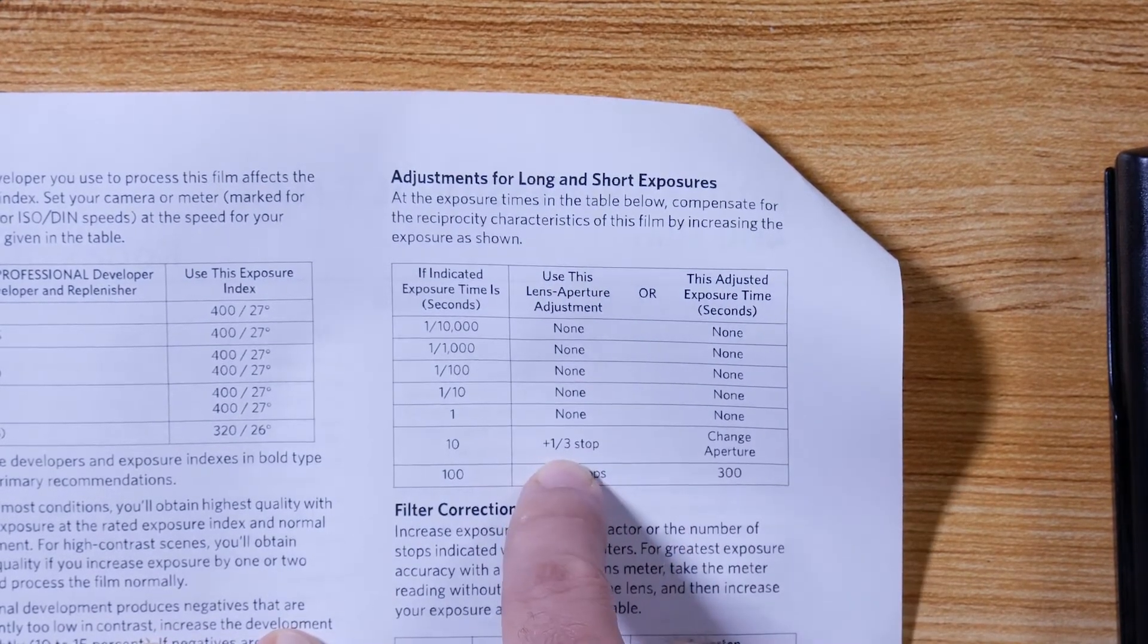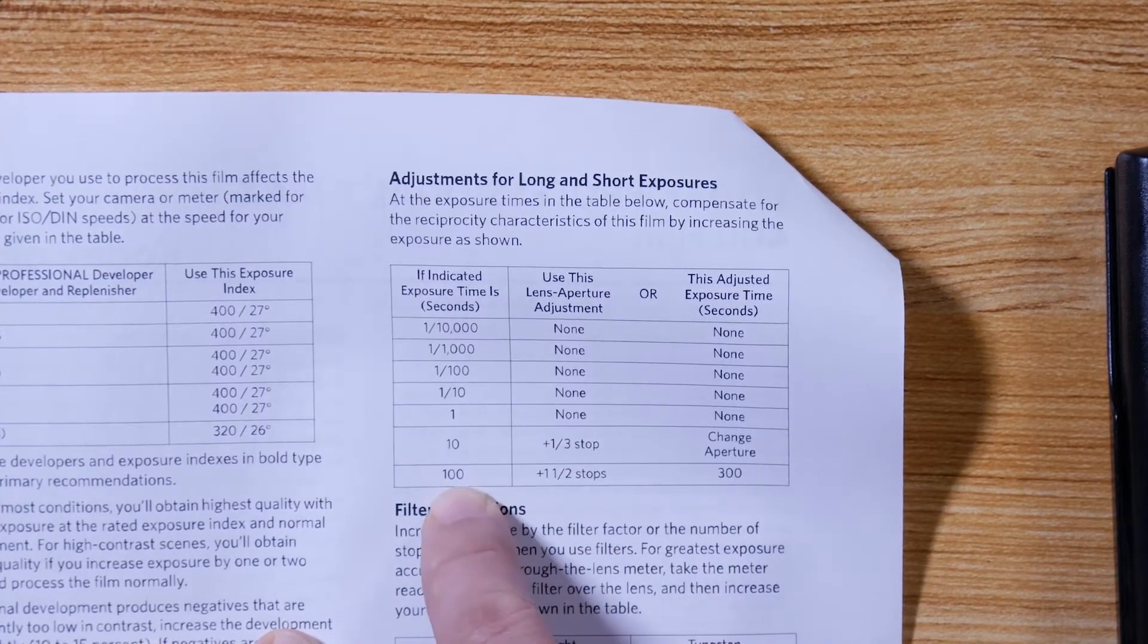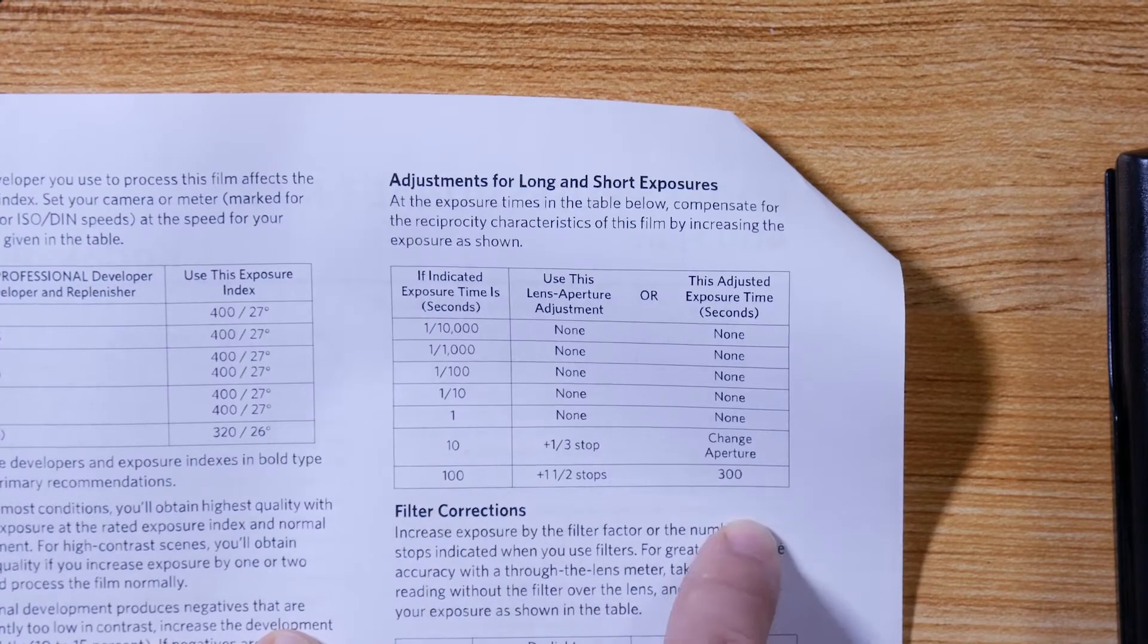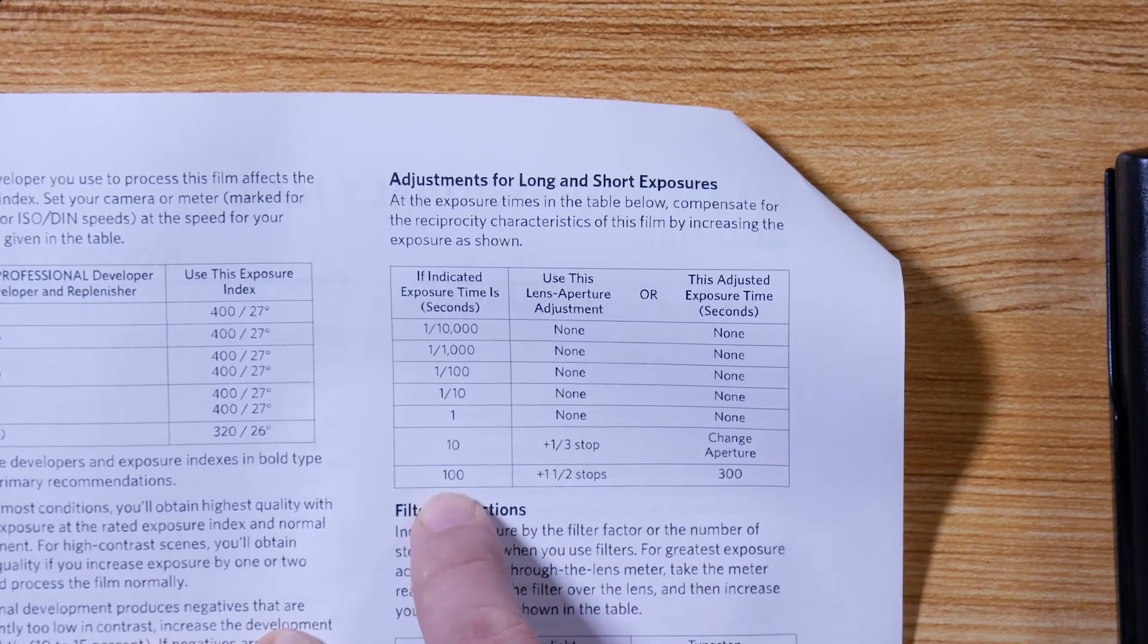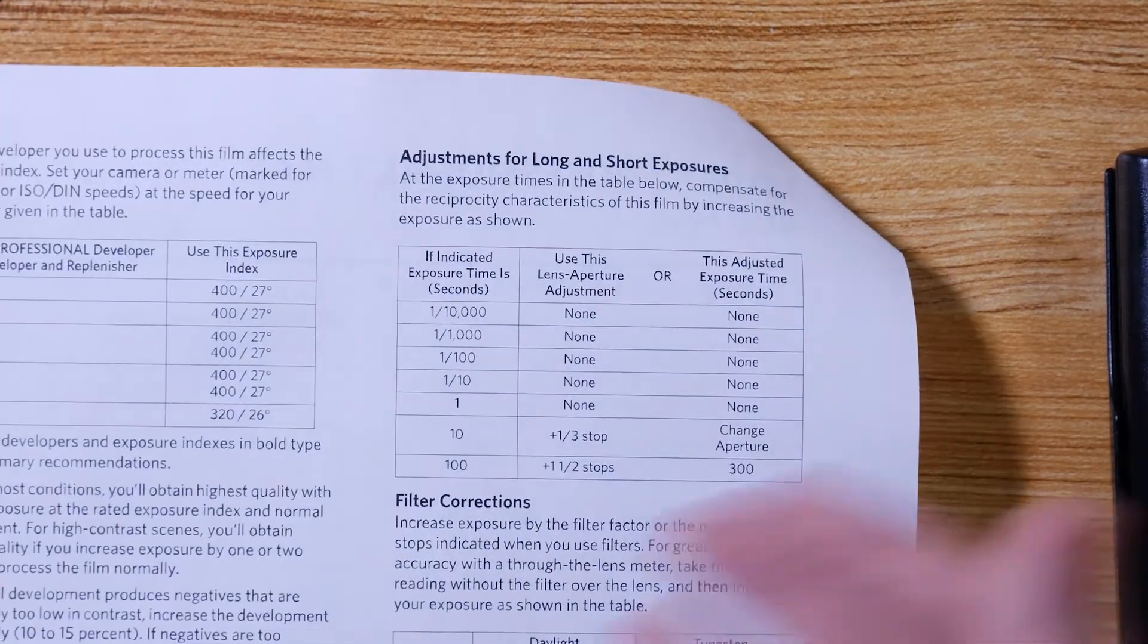Well, we can't really add a third of a stop because it's a pinhole camera - it's got a set aperture, so that doesn't really apply to us. We could write down if it's a hundred seconds make it 300 seconds, but how often do we have a perfect 100 second exposure?